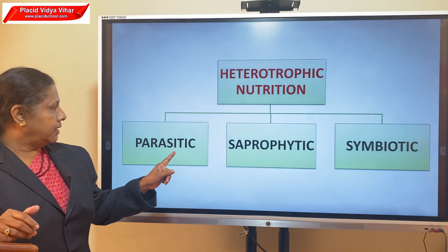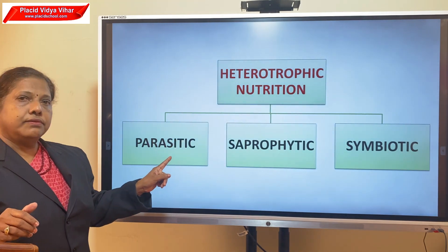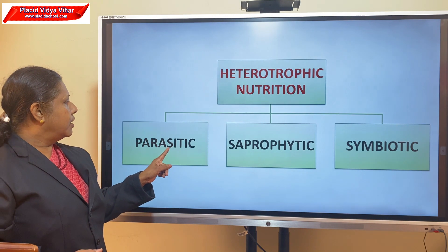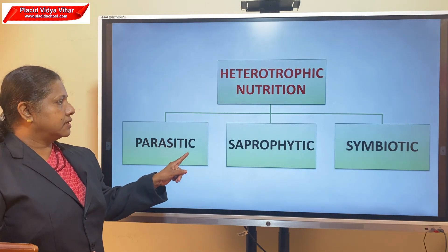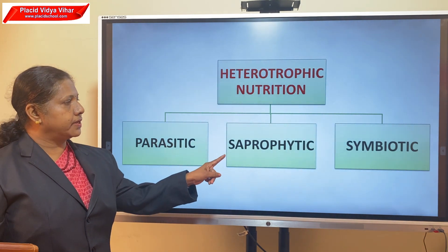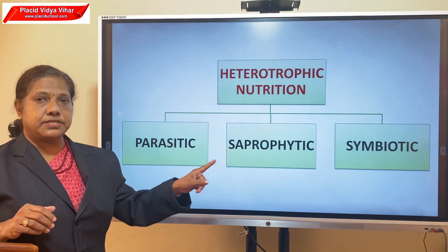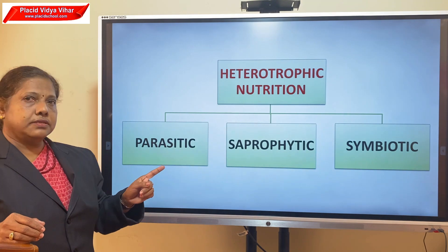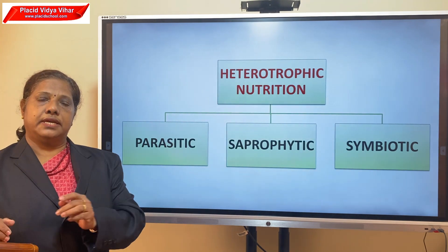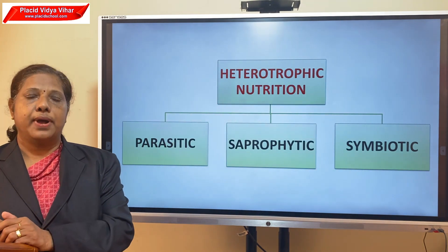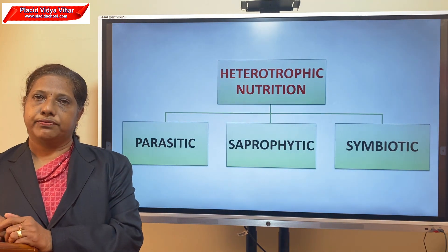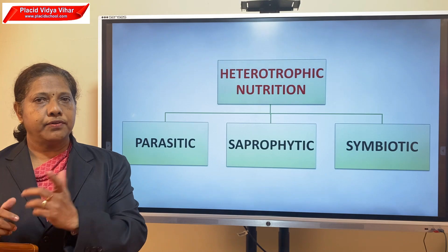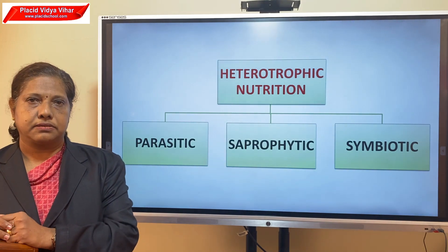We can see there are three types of heterotrophic nutrition: parasitic, saprophytic, and symbiotic. First we will look at the parasitic mode of nutrition.